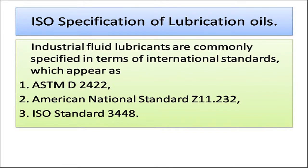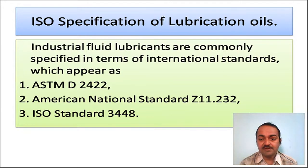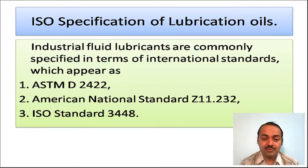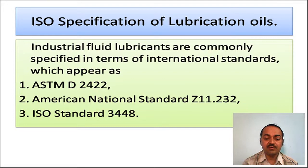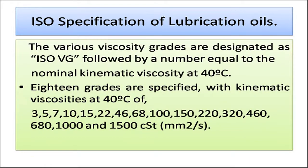ISO specification of lubricating oils: industrial fluid lubricants are specified per standards such as ASTM D2422, American National Standard Z11.232, and ISO standard 3448. ISO VG viscosity grades are designated as ISO VG followed by a number equal to the nominal kinematic viscosity at 40°C. Eighteen grades are specified: 3, 5, 7, 10, 15, 22, 46, 68, 100, 150, 220, 320, 460, 680, 1000, and 1500 centistokes (mm²/s).